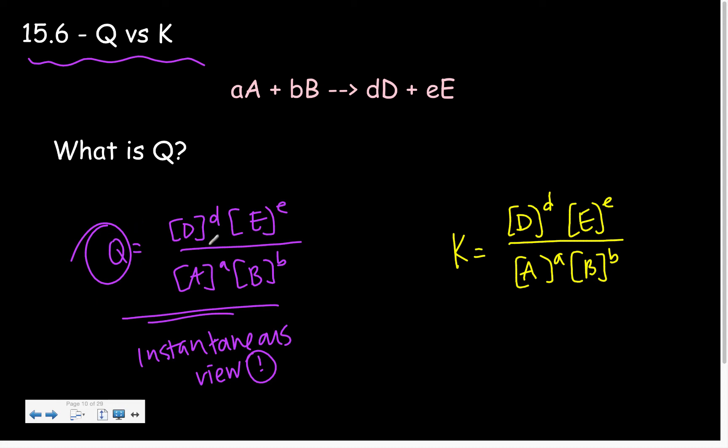Meaning these can be initial concentrations. These can be almost at equilibrium concentrations. These can be any concentrations you want them to be. If we label them with a Q. Now, the point is that we can compare Q and K to talk about where a reaction is and where it is heading.